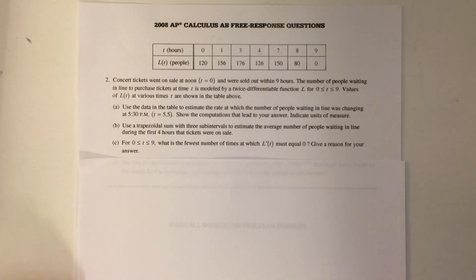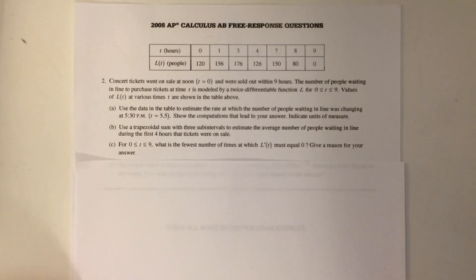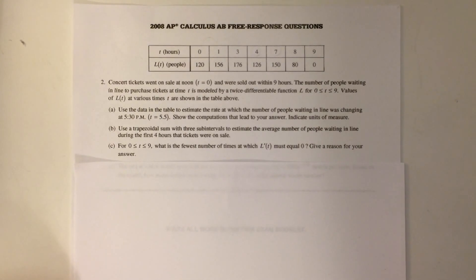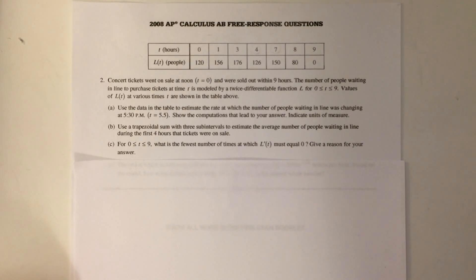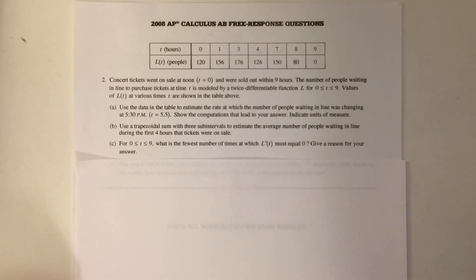Part C says, for t between 0 to 9 hours, what is the fewest number of times at which l prime of t must equal 0? Give a reason for your answer.